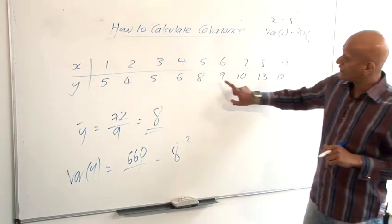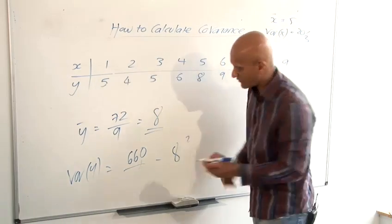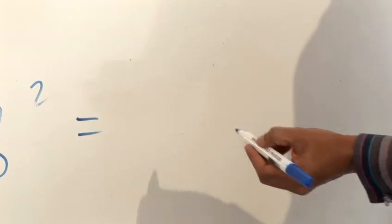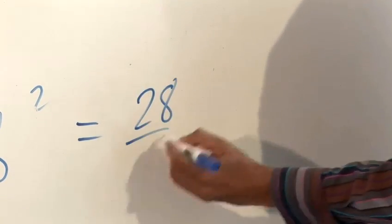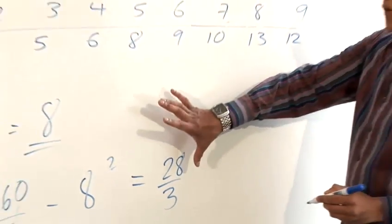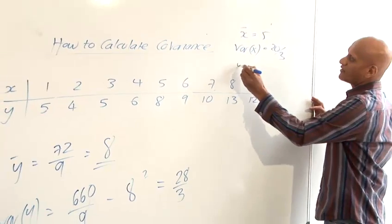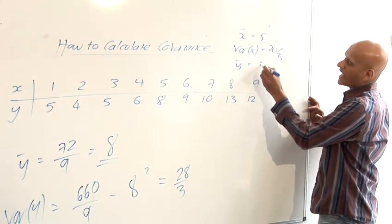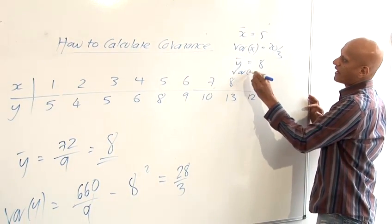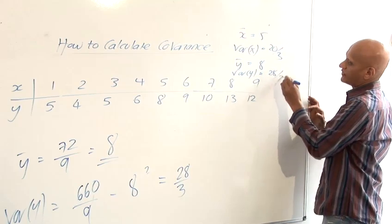And divide it by N, 1, 2, 3, 4, 5, 6, 7, 8, 9 as in every case. And so that gives you an answer of 28 over 3 and again I'll store these numbers. So my mean of Y was 8 and my variance of Y was 28 over 3.